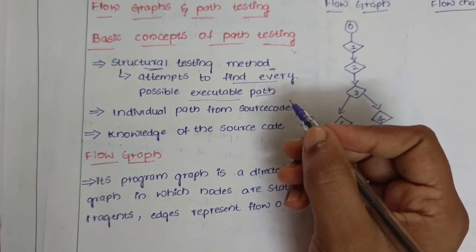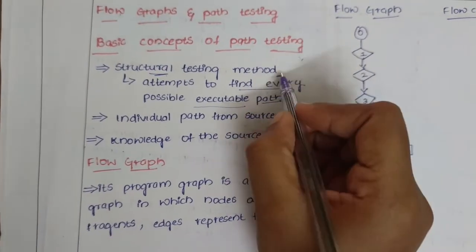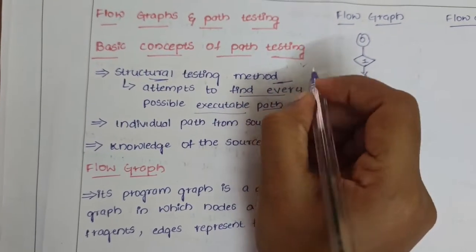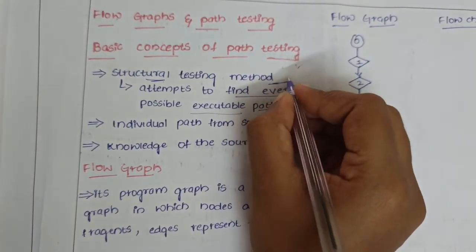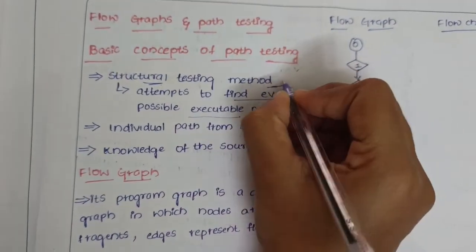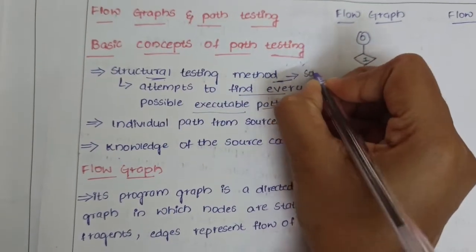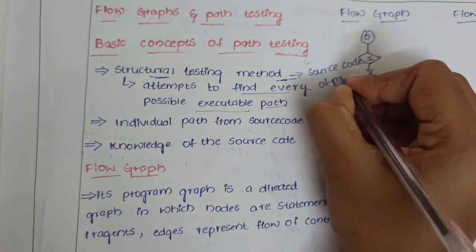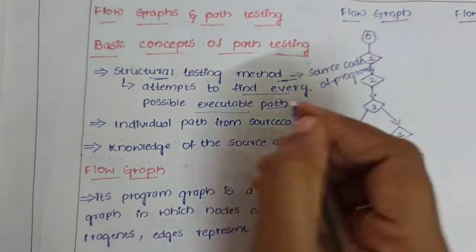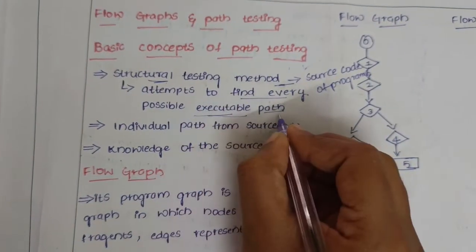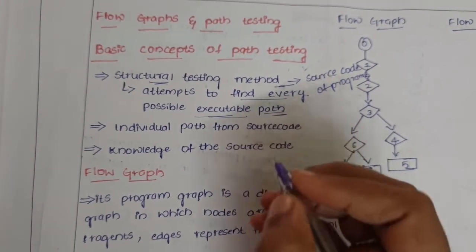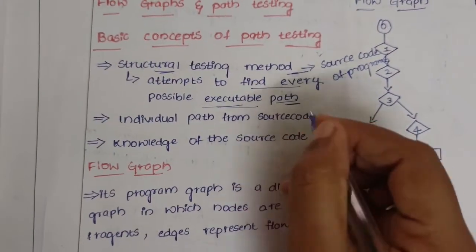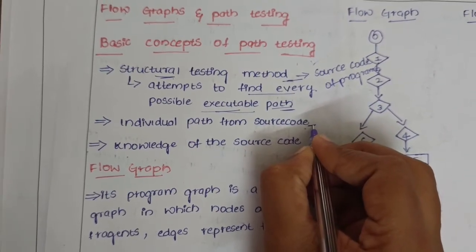Coming to the basic concepts of path testing, it is a structural testing method which is a diagrammatic representation of statements in a program or anything involving the source code of a program. It attempts to find every possible executable path — every step which is executable.